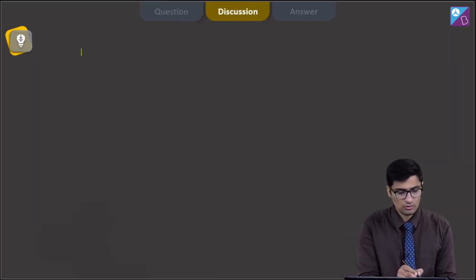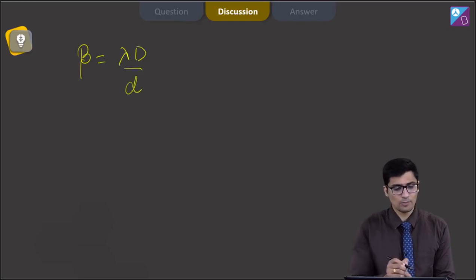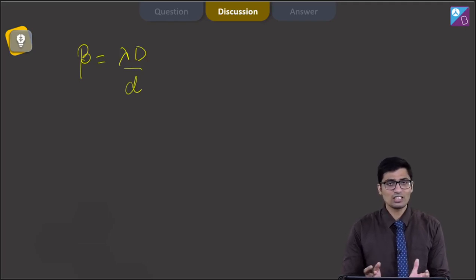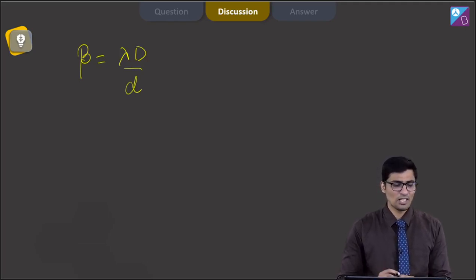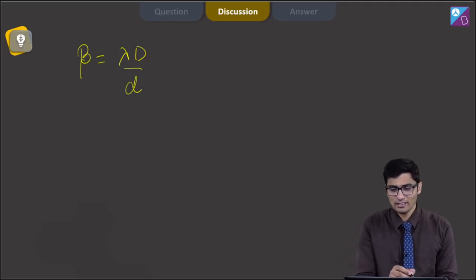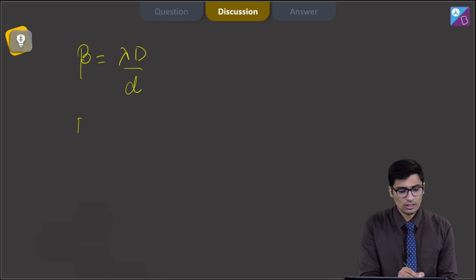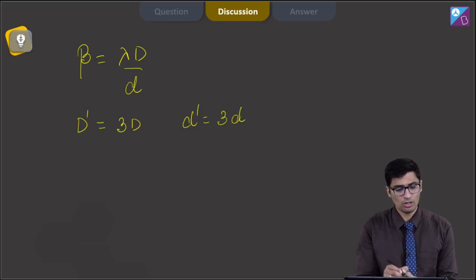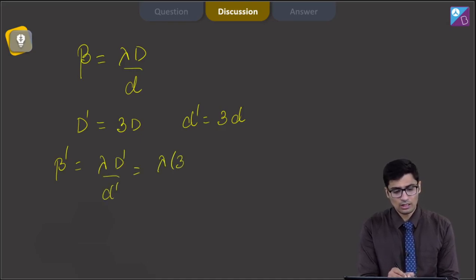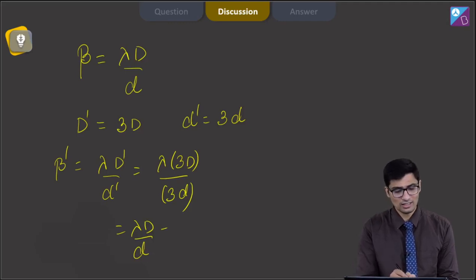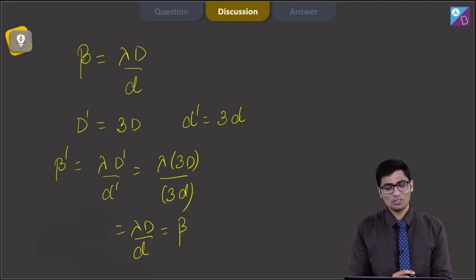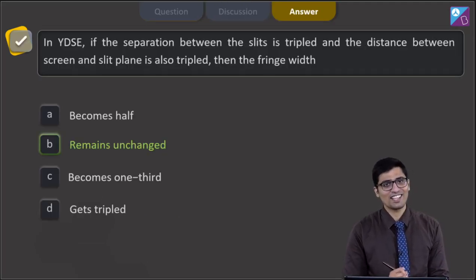Dear students, the fringe width β is written as λD by d, where λ is the wavelength of light used, D is the distance between the slit plane and the screen, and d is the separation between the two slits. Here, the distance between the slits is tripled and the distance between the screen and slit plane is also tripled, meaning D' = 3D and d' = 3d. So the new fringe width β' equals λD' by d' = λ(3D) divided by (3d) = λD by d, which equals the initial fringe width. Therefore the fringe width remains unchanged and the correct answer is option number B.